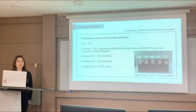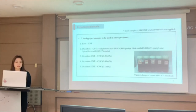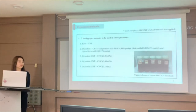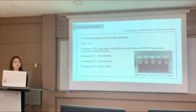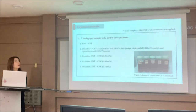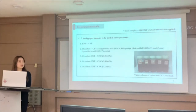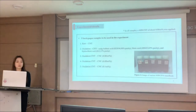Next is the experimental details. A total of five buckypaper samples were made and tested. The first sample is untreated CNT. The second is oxidized CNT using sulfuric acid, nitric acid, and hydrochloric acid. The third is the oxidized CNT with 0.068% CNC added. The fourth is oxidized CNT with 0.1% CNC added.